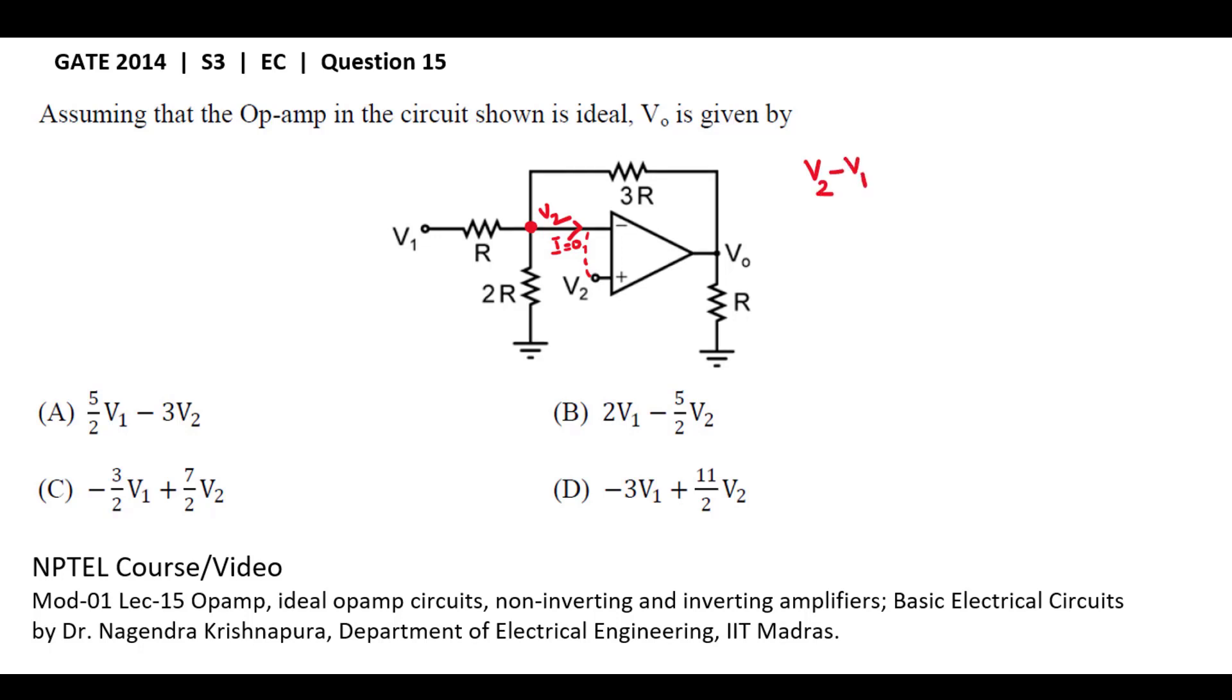V2 minus V1 by R plus V2 minus 0 by 2R plus V2 minus V0 by 3R equals to 0.